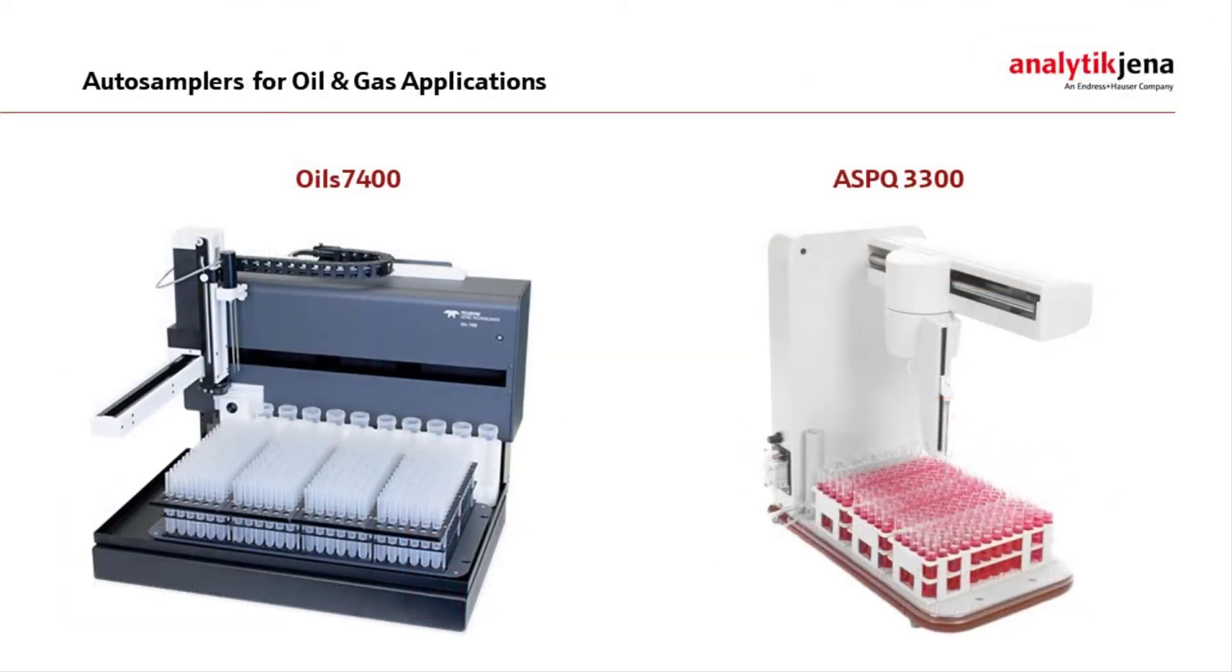Analytik Jena provides two options for automated sampling of organic samples: the OIL 7400 on the one hand, and the ASPQ 3300 on the other.